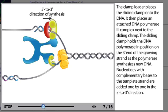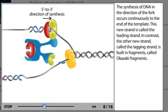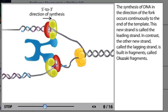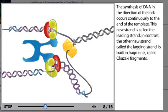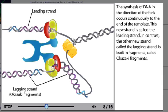Nucleotides with complementary bases to the template strand are added one by one in the 5 prime to 3 prime direction. The synthesis of DNA in the direction of the fork occurs continuously to the end of the template. This new strand is called the leading strand. In contrast, the other new strand, called the lagging strand, is built in fragments called Okazaki fragments.